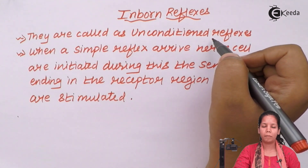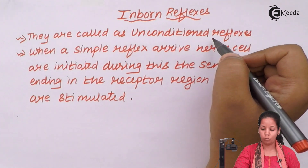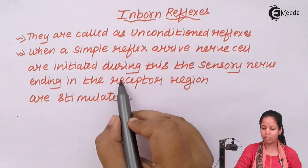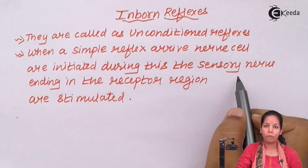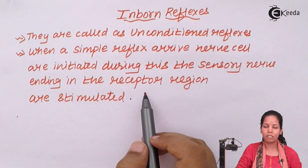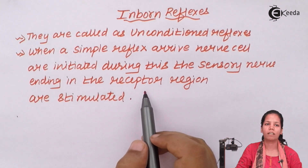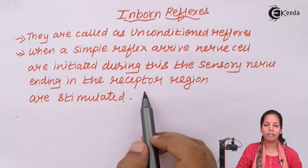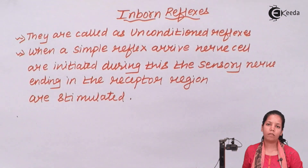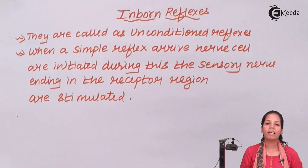They work on the same parameters as simple reflex action. Whenever a stimulus arrives at the nerve cell, it is initiated by the sensory neurons, and once initiated by the sensory nerve ending, it reaches the receptor regions. The receptor regions get stimulated, the stimuli passes to the sensory neurons, which send it to the spinal cord where processing happens, and finally it goes back to the receptor region where the work is done.